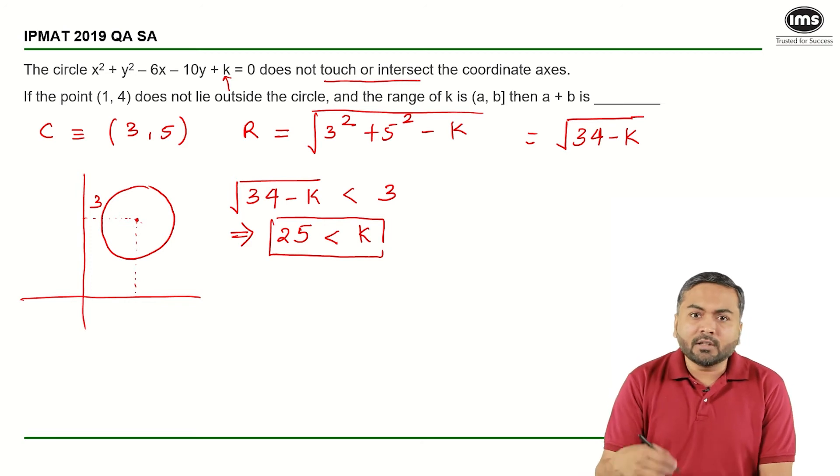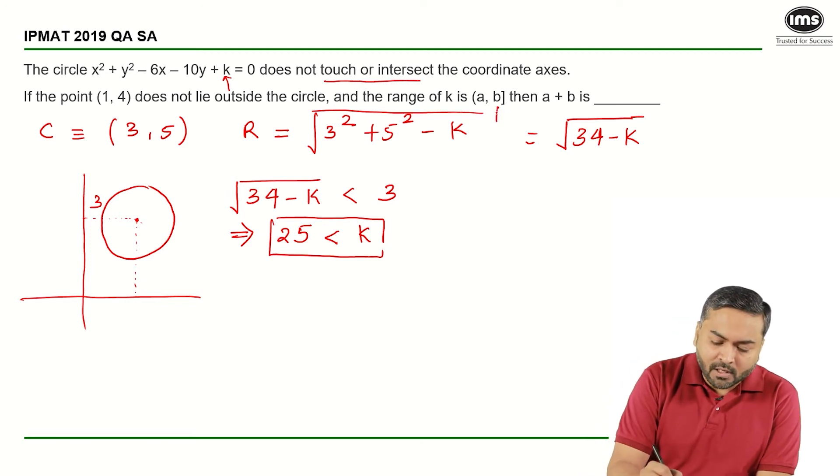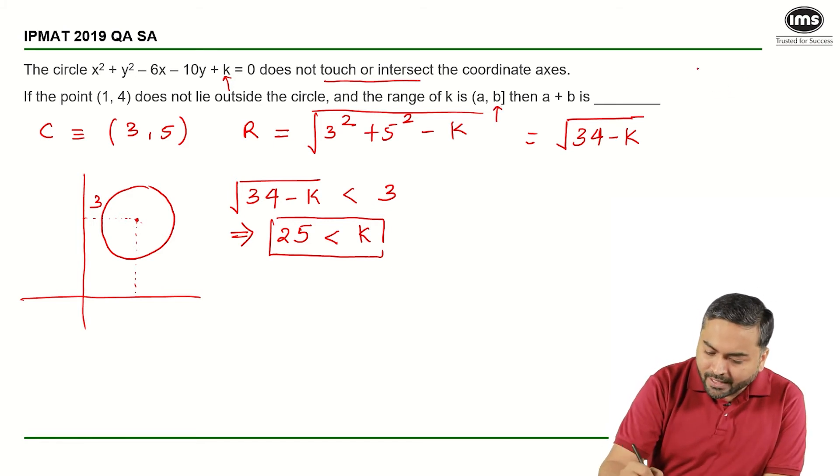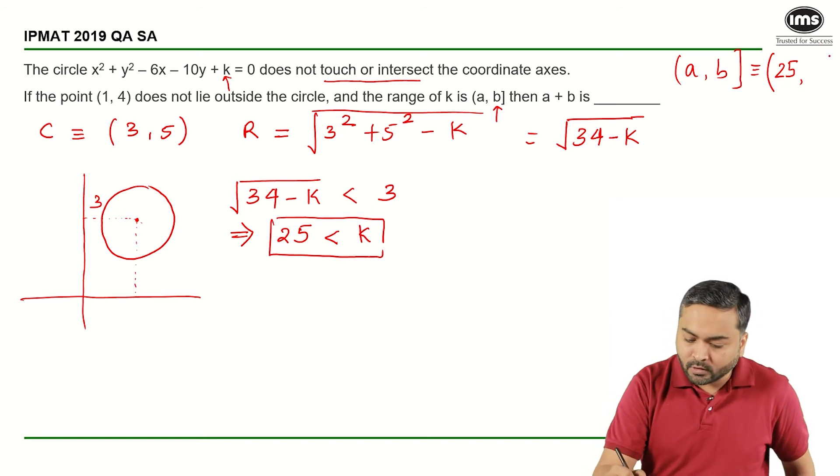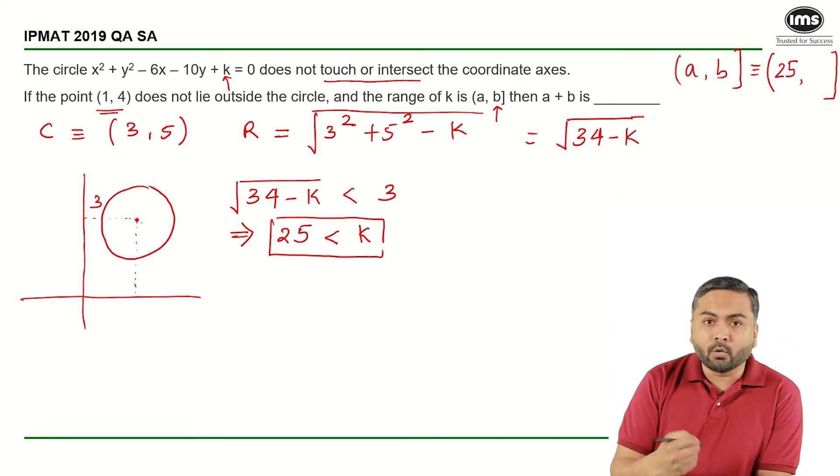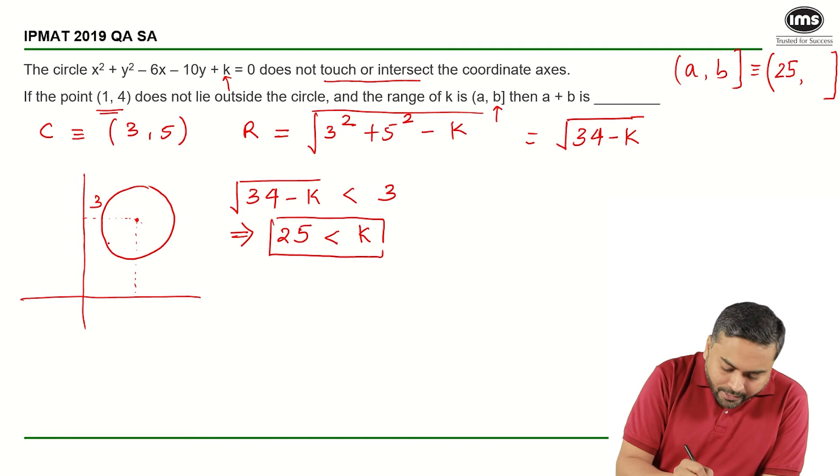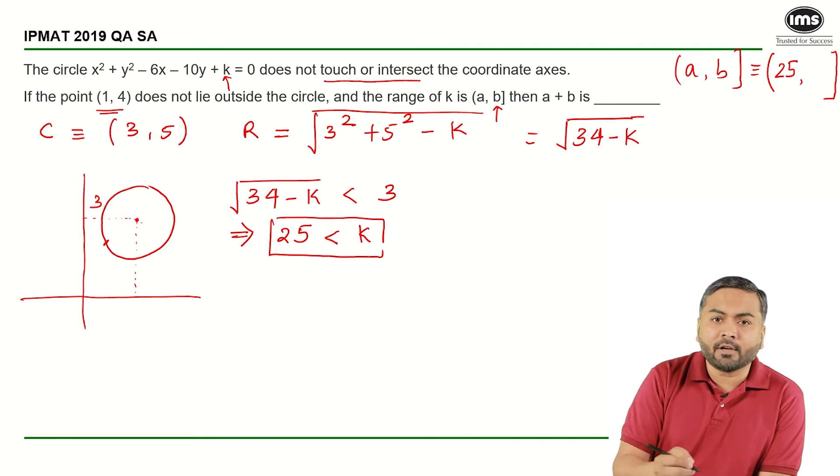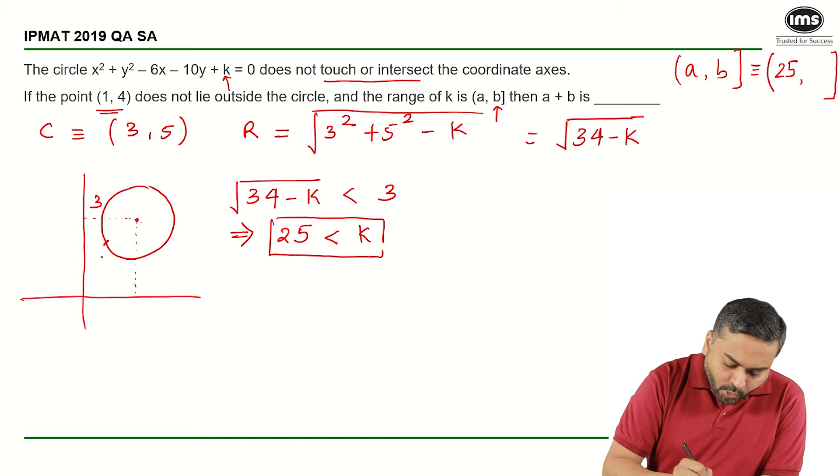Now how can I get the other constraint? How can I get the value for b here? A is clearly 25. I need to find out what is b now. There is one more condition given that the point 1 comma 4 does not lie outside the circle. So the worst case it can be on the circumference or it can be inside. So let us say this point is 1 comma 4, this center is 3 comma 5.